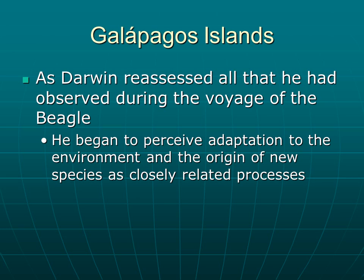As Darwin reassessed all that he had observed during the voyage on the Beagle, he began to perceive adaptation to the environment and the origin of new species as closely related processes. For example, if you noticed a bird in South America and then traveled to the Galapagos Islands and saw that the bird looked similar but was responding to its surroundings differently, then traveled to Australia and noticed yet another adaptation. His stop at the Galapagos was especially important because he could study different birds on different islands separated by just a little bit of water.